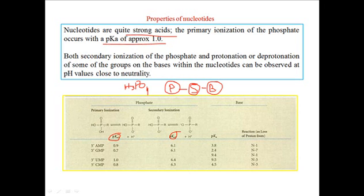As a result of that, this gives us a pK of near about one, which is 0.9 in case of AMP, 0.7 in case of GMP, 0.8 in case of CMP, and one for UMP. You can see almost approximately one, that means a very, very highly acidic substance.